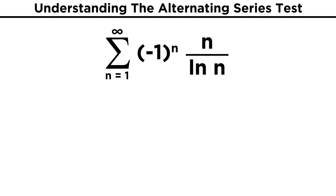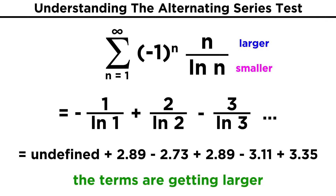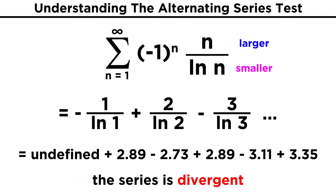Let's do just one more: negative one to the n times n over the natural log of n. Do the terms increase or decrease? Well, the natural log of n will always be smaller than n, and it will increase at a slower rate than n does, as we can see by plugging in a few values for n. So the terms are increasing, and this series is divergent.